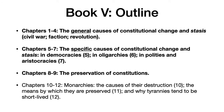Here's an overall outline of Book 5. The first four chapters are about the general causes of constitutional change and what Aristotle calls stasis, meaning civil war, faction, or revolution. Chapters 5 to 7 are about the specific causes of constitutional change and stasis in democracies, in oligarchies, and in polities and aristocracies. Chapters 8 to 9 are about the preservation of constitutions, where Aristotle takes the lessons he's learned about what causes strife and faction and constitutional change and infers some strategies for preserving constitutions by way of preventing that kind of stasis.